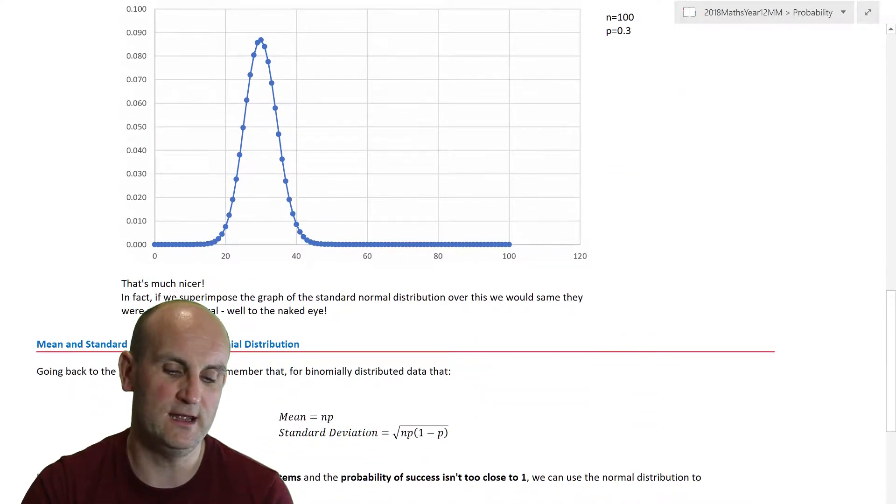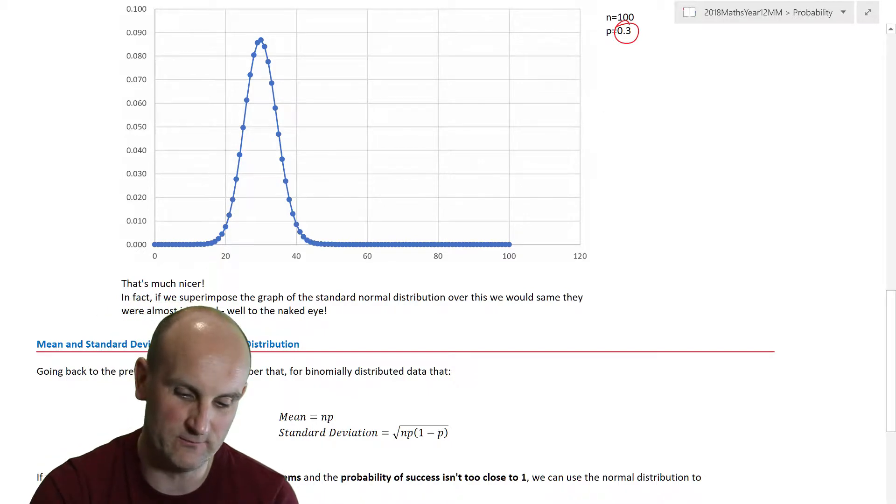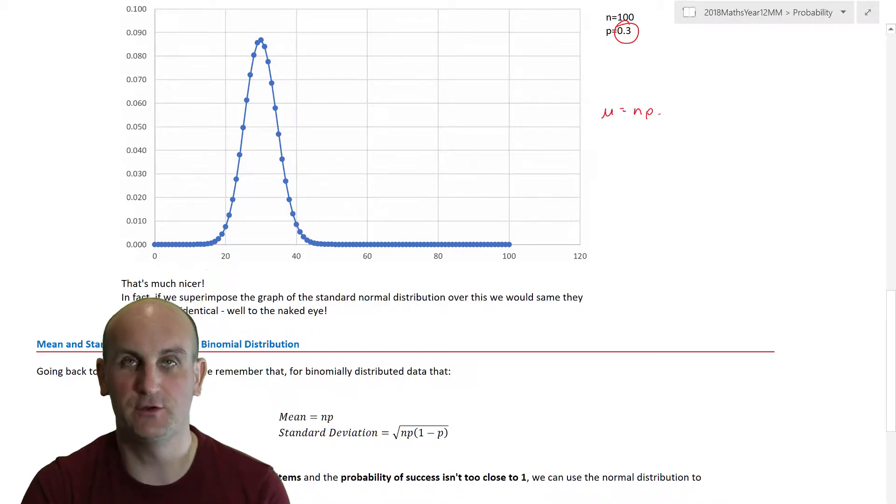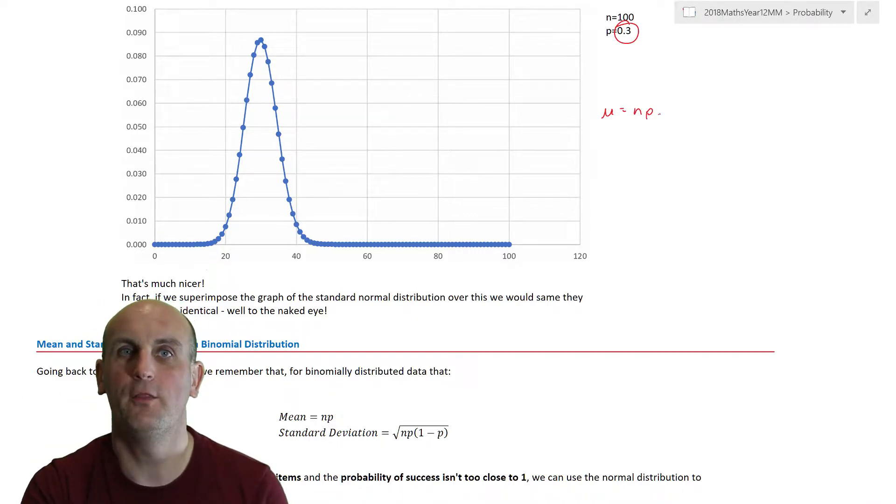And then basically, we moved on to the idea that actually, if we had a bigger value of P of 0.3, while the fact is that the mean still stays as n times P, our standard normal distribution looked a little bit better. It was more sort of centered. But the highlight of all of this is that with a sufficiently large number of n and P, or a sufficiently large number of n, then we can use the normal distribution to approximate the binomial distribution.